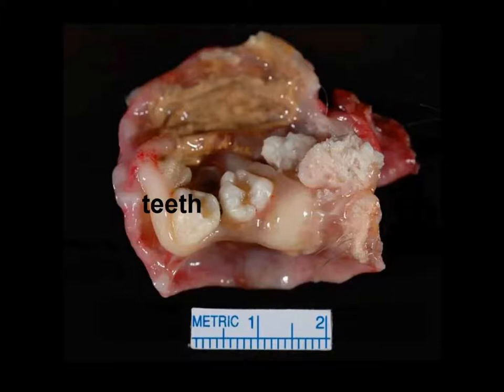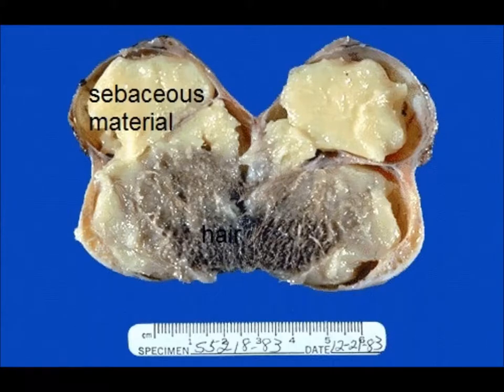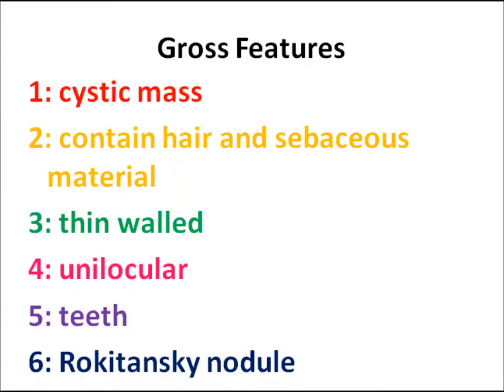Sometimes these teratomas also contain multiple teeth, and they also arise from a prominent nodule in the wall of the cyst. Sometimes these tumors are completely filled with hair shaft and sebaceous material. In this cut open tumor you can appreciate the lower end showing hair shaft and the sebaceous material in the upper half.